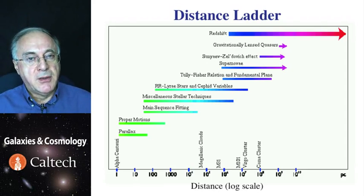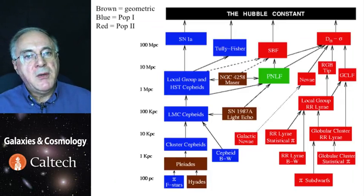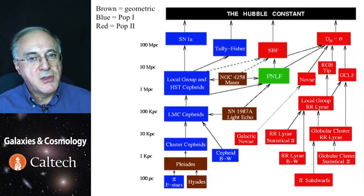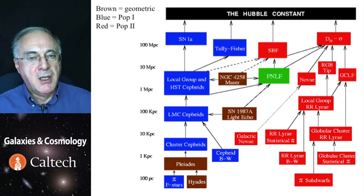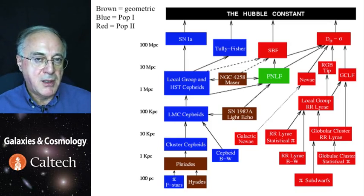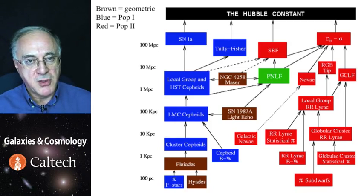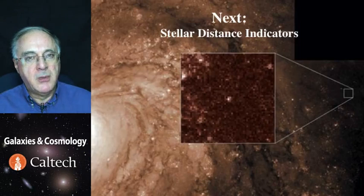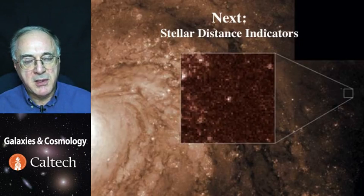In principle, the Sunyaev-Zeldovich effect and gravitational lensing do not depend on the distance ladder. However, they are model dependent, and therefore previous calibrations are important as a check. Here is a schematic flowchart — not to confuse you, but to show how complex the network of measurements has to be, with mutual checks, to find out how far things are in the universe. It starts with nearest stars and goes all the way to supernovae and truly cosmological scales. Next time, we will talk about stellar distance indicators.